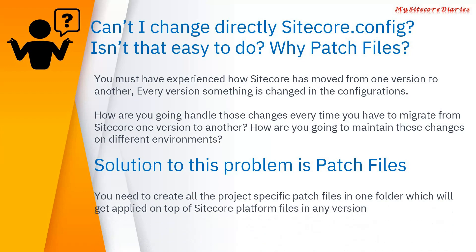The solution is to use patch files. As a best practice, when you deploy a vanilla Sitecore instance, keep those configuration files as-is. If you want to make any changes, create a patch file instead. For older versions there is one structure for patch files; from version 9 onwards there is a different approach. You create project-specific files on top of your Sitecore patches. There is no need to remember what changes you've made — you simply deploy the patch file and it will override the appropriate Sitecore configuration regardless of version.